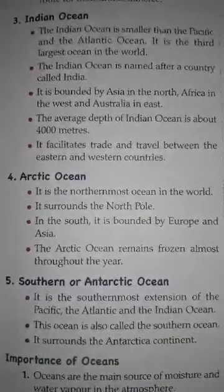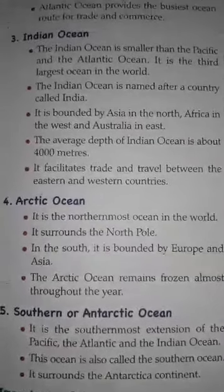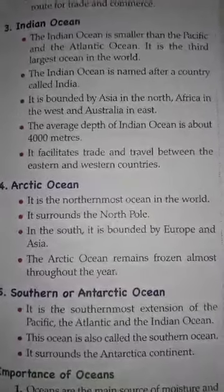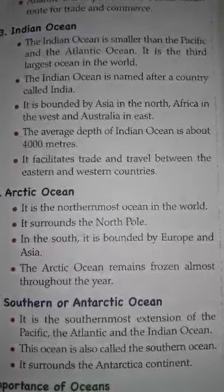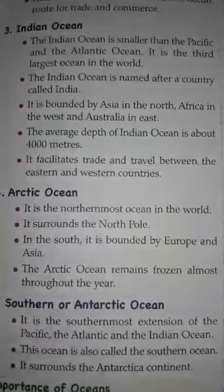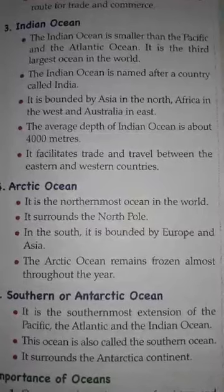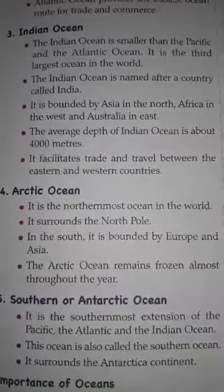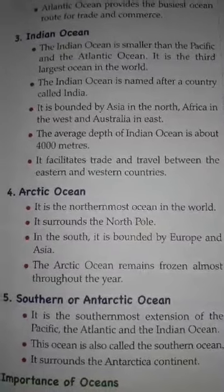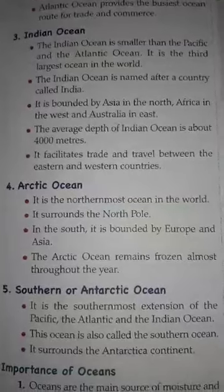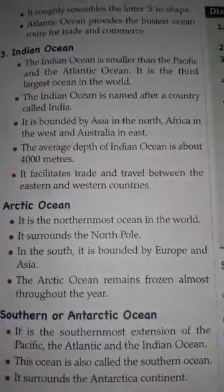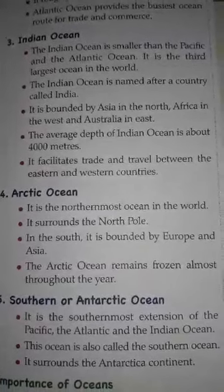The third largest ocean is the Indian Ocean. It is comparatively small in size with an average depth of 4,000 meters. The two great bays on either side of the peninsula of India — the Bay of Bengal and the Arabian Sea — belong to the Indian Ocean. The Indian Ocean has thousands of small islands like the Maldives and Cocos Islands. Mauritius Islands are volcanic islands. It is bounded by Asia in the north, Africa in the west, and Australia in the east. It facilitates trade and travel between the eastern and western countries.